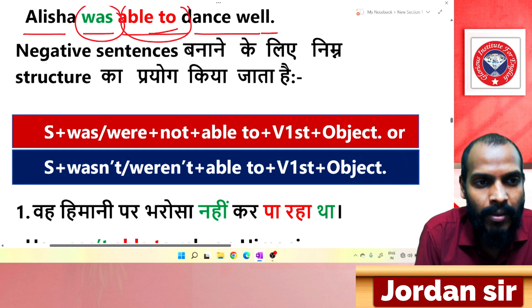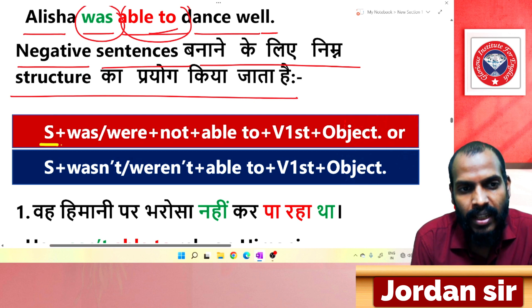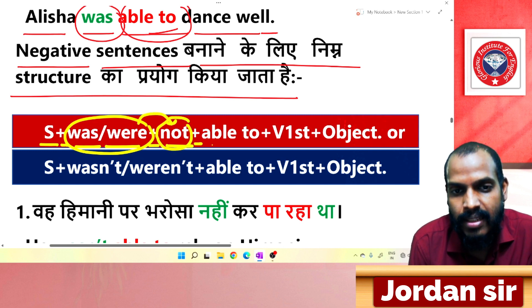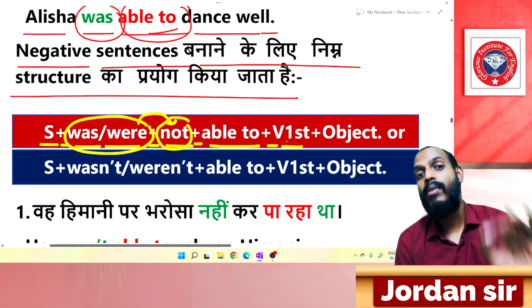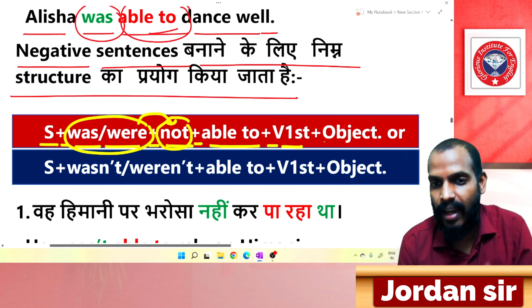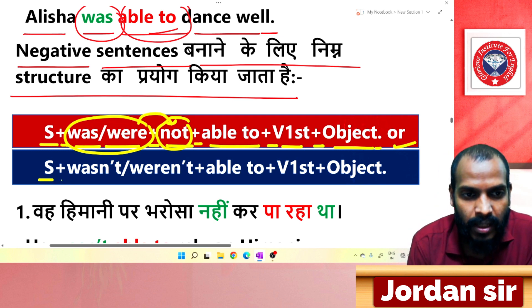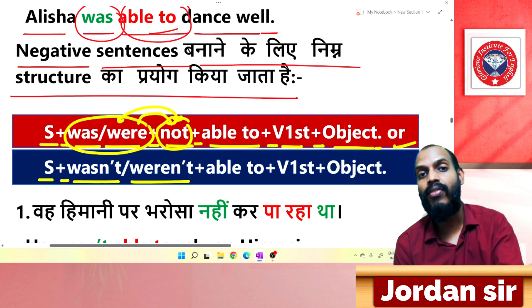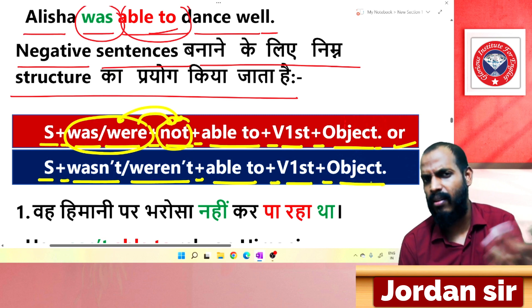Now let's look at negative sentences. The structure is: Subject + was/were + not + able to + verb (first form) + object. You can also write it as: Subject + wasn't/weren't + able to + verb (first form) + object. 'Wasn't' is the contraction of 'was not'. The structure is the same either way.